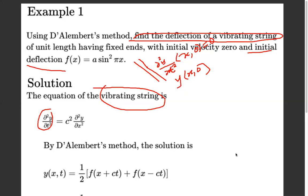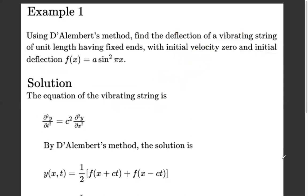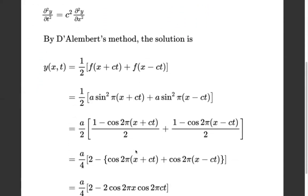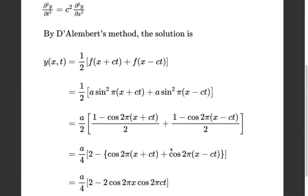By using D'Alembert's method, the solution y(x, t) for the initial value problem is: y(x, t) = (1/2)·[f(x + ct) + f(x - ct)].